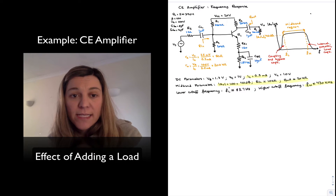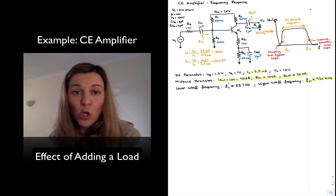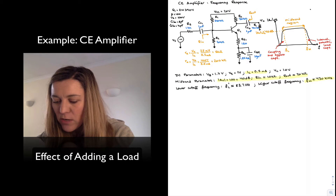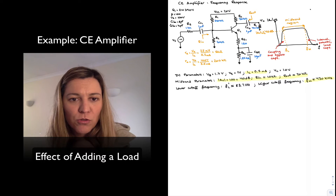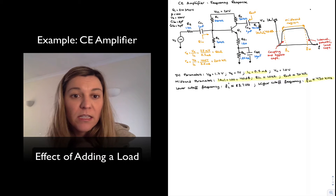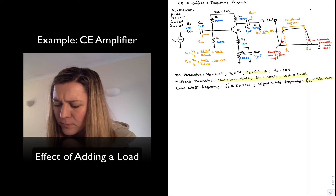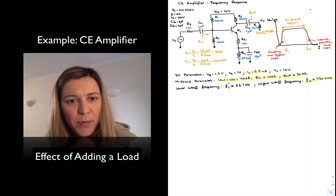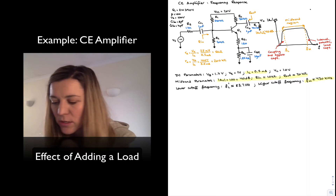The last thing we are going to consider is the effect of adding a load on the frequency response of our amplifier. We have our common emitter amplifier, and we assumed a load resistor large enough that it didn't load our circuit — 100 mega ohms — which was much greater than the output resistance of the amplifier, approximately RC or 20 kilo ohms. Now let's see what happens if I add a load resistor comparable to RC, thus loading the circuit.